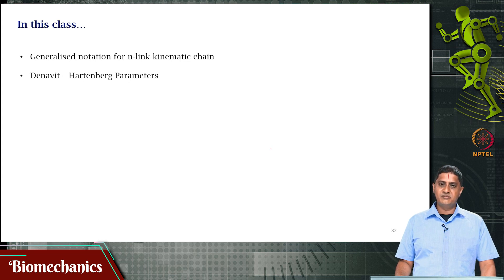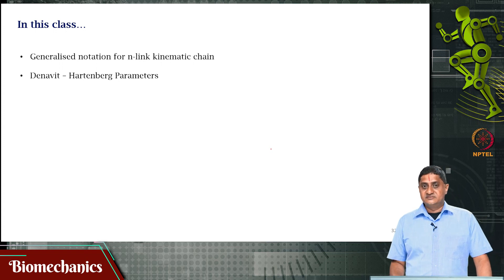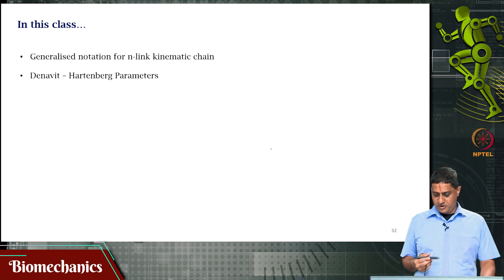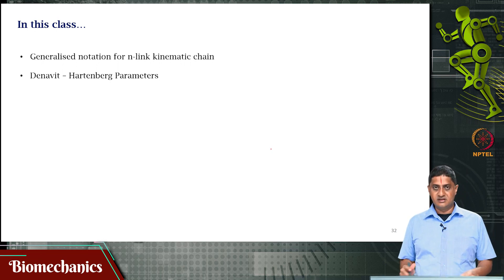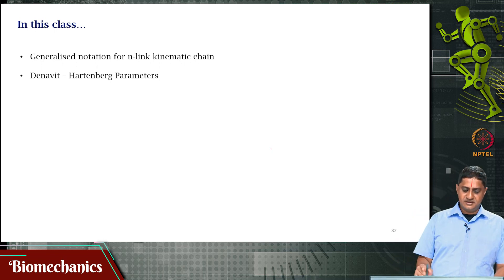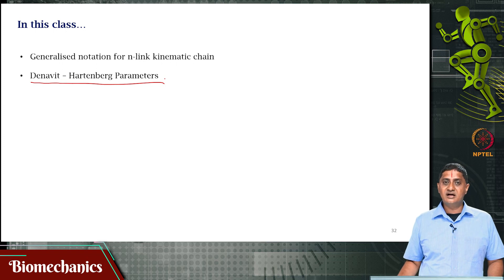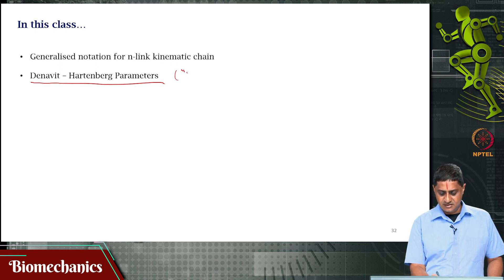What would be a method that you would use to compute the end point coordinates when there are n links with different links? The popularly used method in the field is called DH parameters — Denavit-Hartenberg parameters, also called DH parameters.